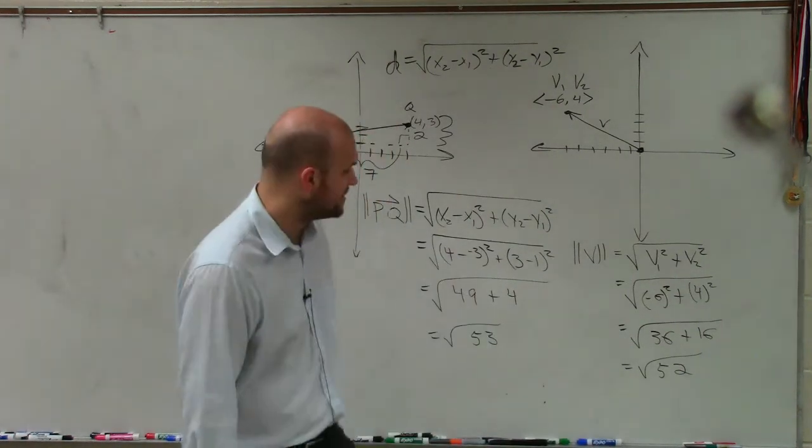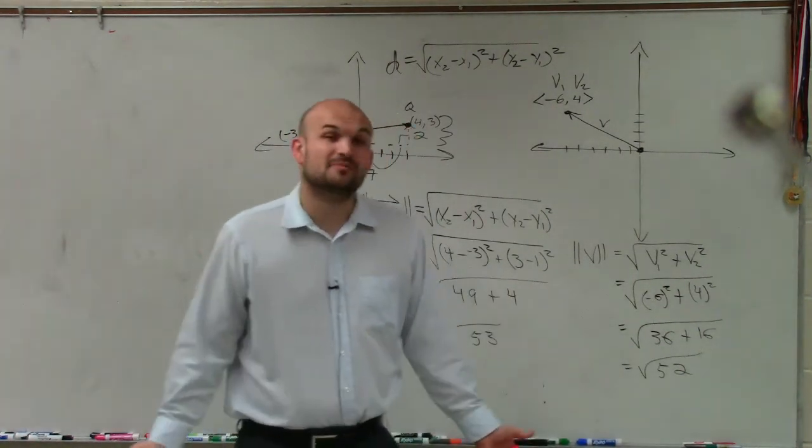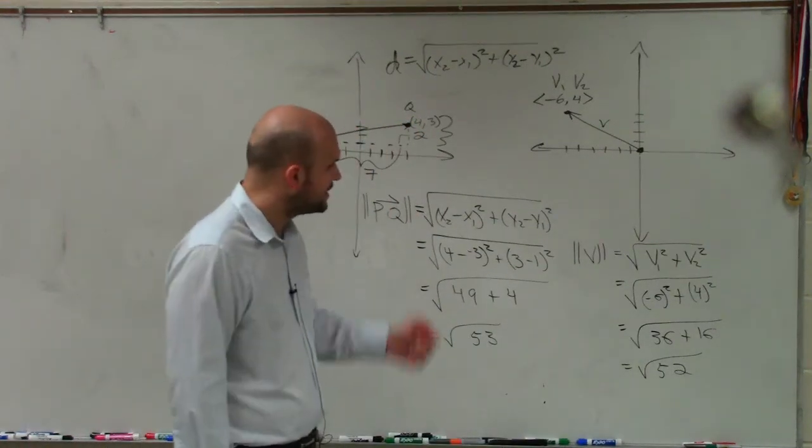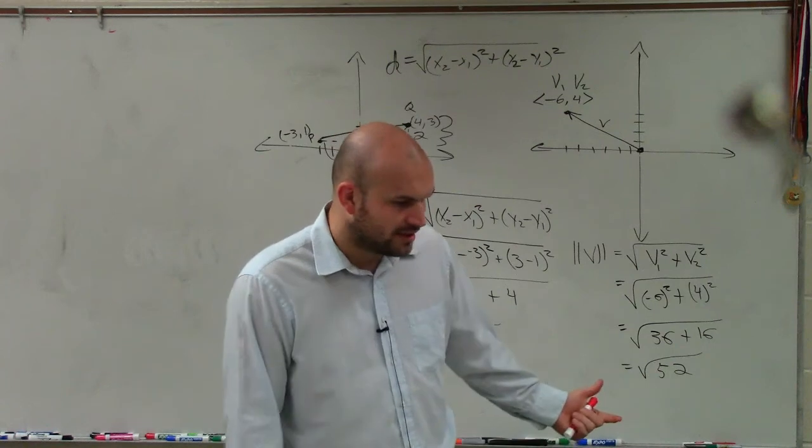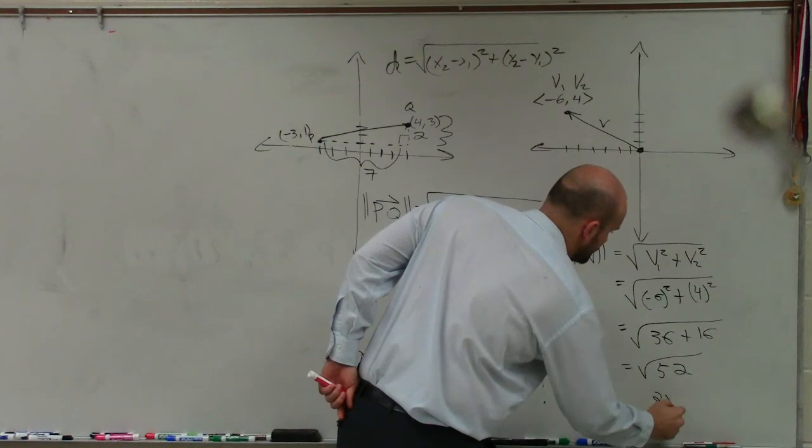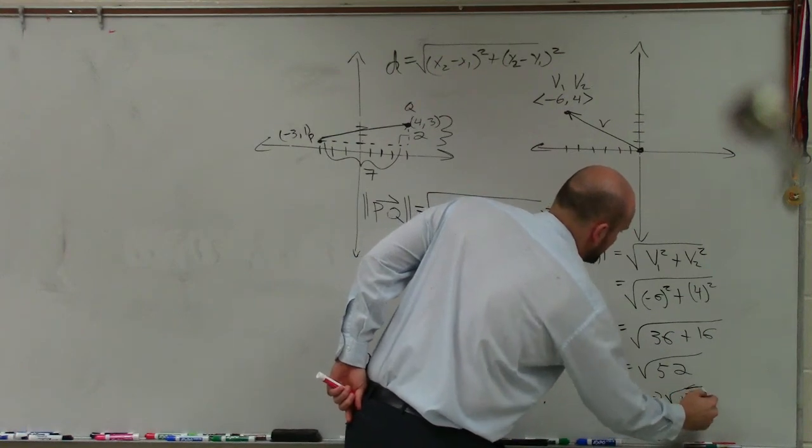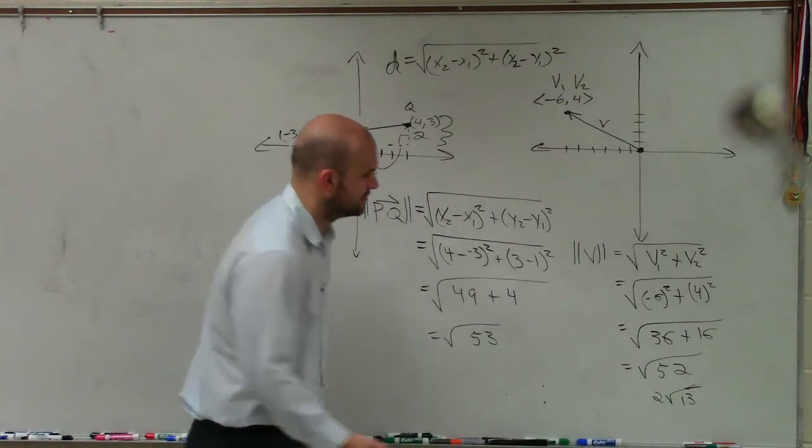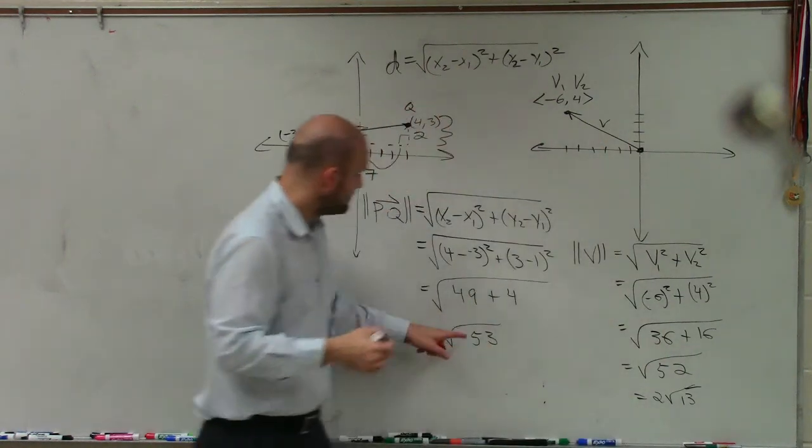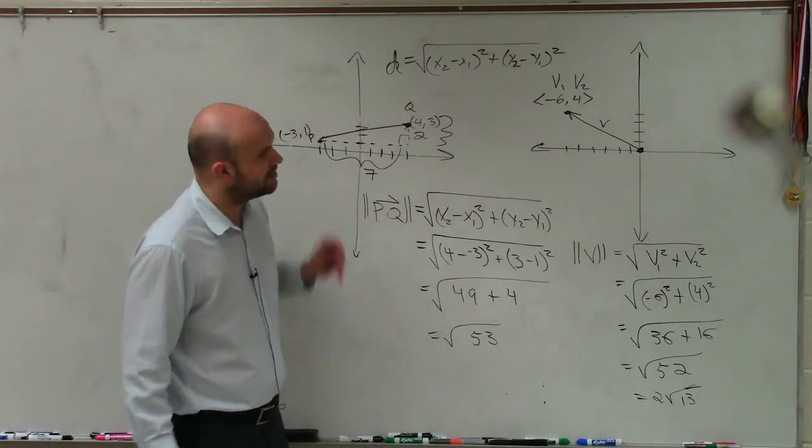And then a lot of times we can simplify that magnitude. And so you can say, how many times does 4 go into there, which would be 13. So you could do 2 square root of 13. So that would be the magnitude for this vector, which would be that length. And the magnitude for this vector would be the square root of 52.